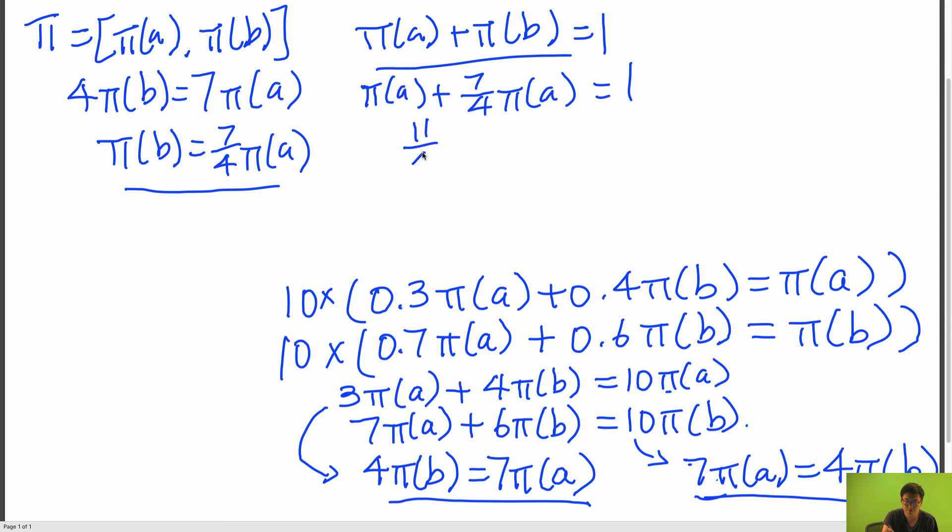So 11 over 4 pi of A is equal to 1. Pi of A is equal to 4 over 11. And therefore pi of B is equal to 1 minus pi of A, which is equal to 7 over 11.